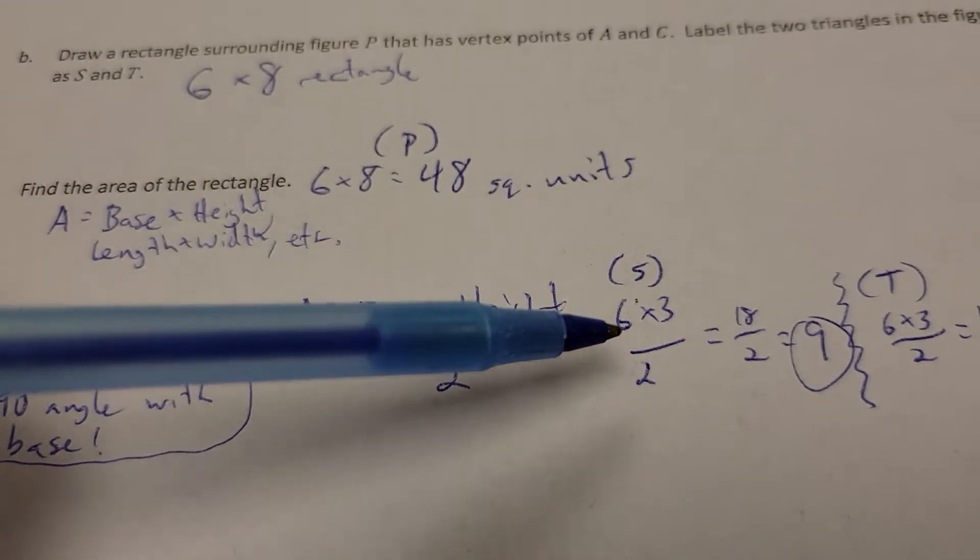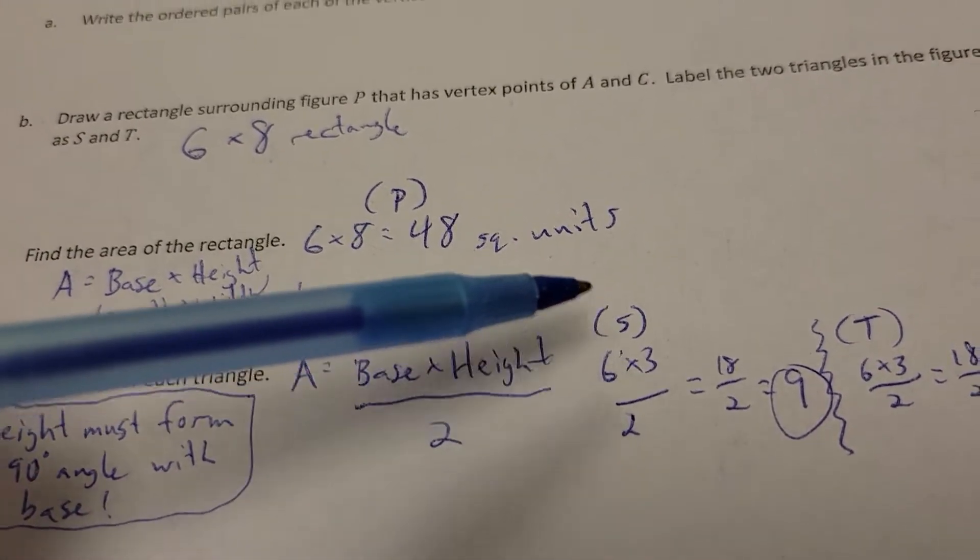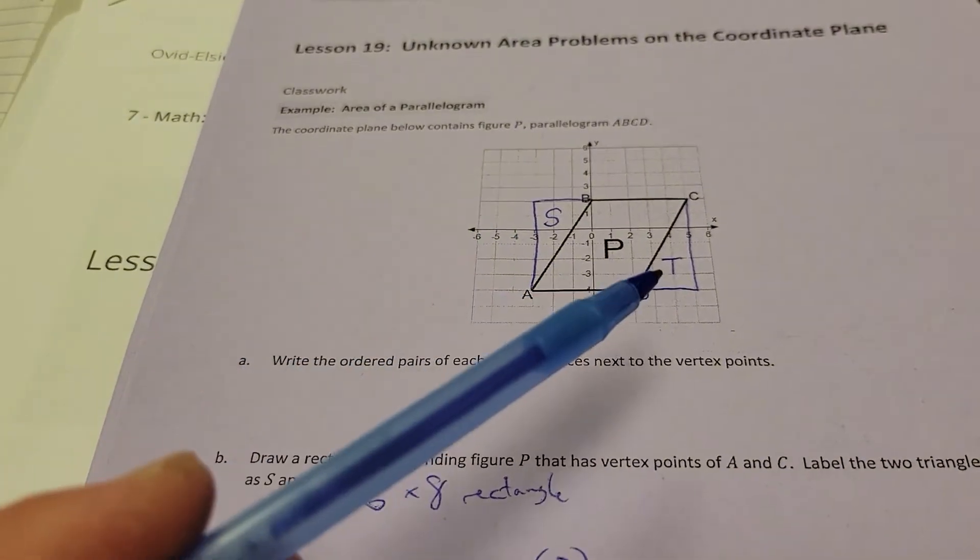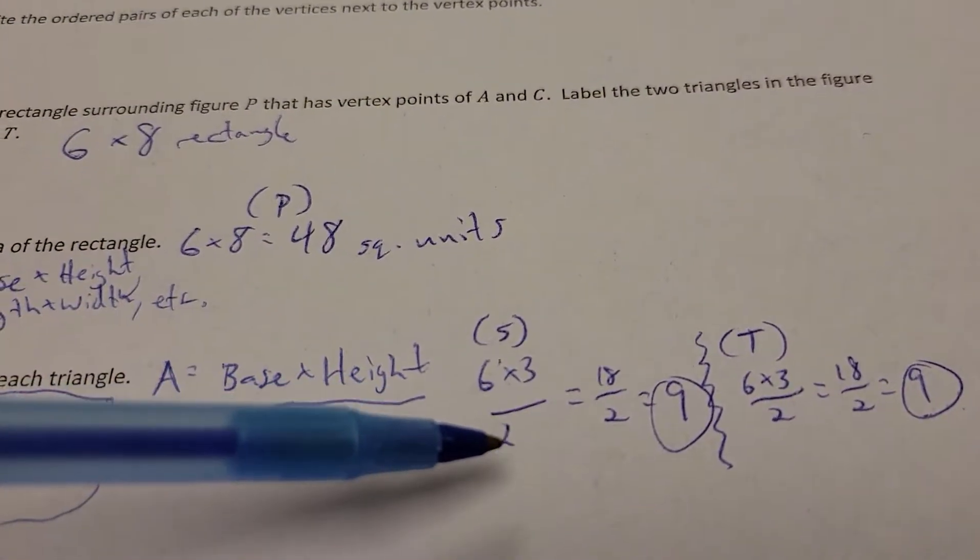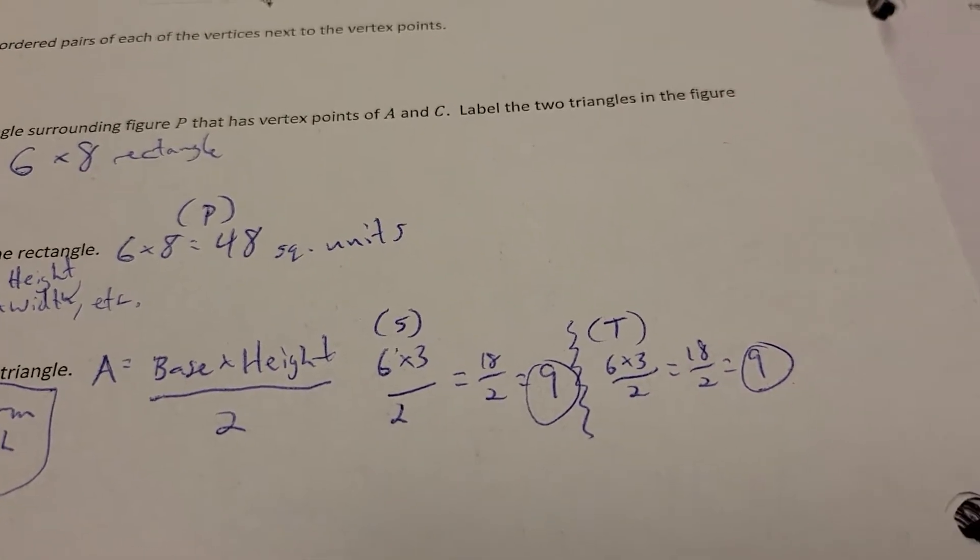But what I do have to do is multiply those and divide by 2. So 6 times 3, in triangle S, for example, or T, doesn't really matter, they're the same thing. It gives me 18 out of 2, which is 9, and they're both the same thing, so they're both 9.